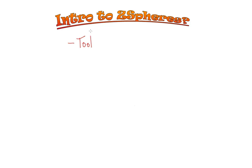First off, what are Z-Spheres? In essence, they're really just a special tool. Every type of 3D model you create inside of ZBrush is technically called a Z-Tool. I want you to use 'tool' in the conceptual sense, because Z-Spheres themselves are not something you're going to be exporting. You can't take Z-Spheres over to Maya for animation — it's a means to an end, the end being an actual polygon mesh.